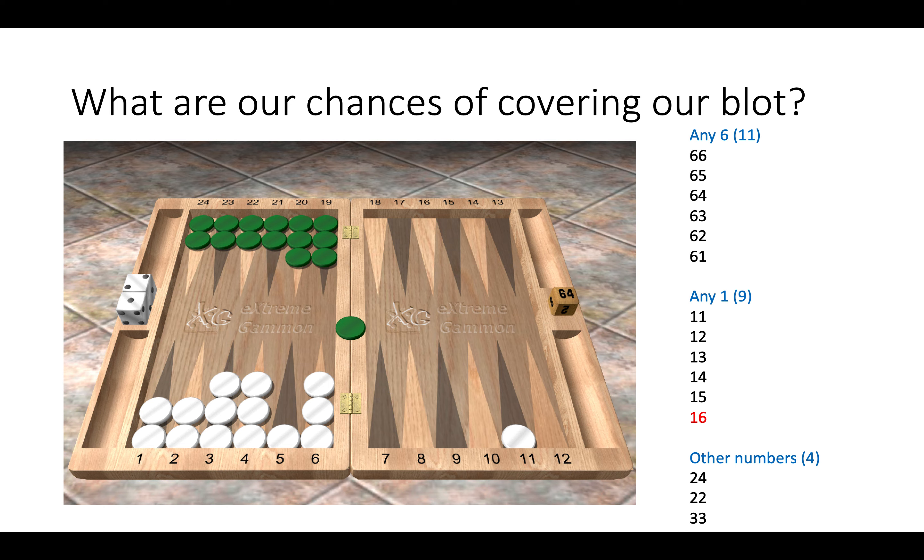So here we can see that we have any six or any one to cover. So any six would be 11, and any one would also be 11, but we discount the one-six because we've already counted it above. So there we have 20 numbers, but then also we have other combinations such as two-four, double-two, and double-three. So in total that would be 24 numbers. Now one way we can work this out is two numbers to cover is always 20 shots, and then we work out the additional numbers. So one number is 11, two numbers is 20, and then we add on the extra rolls. So here we have 24 rolls to cover our blot, which is pretty high. 24 out of 36 is 66 percent chance of covering.